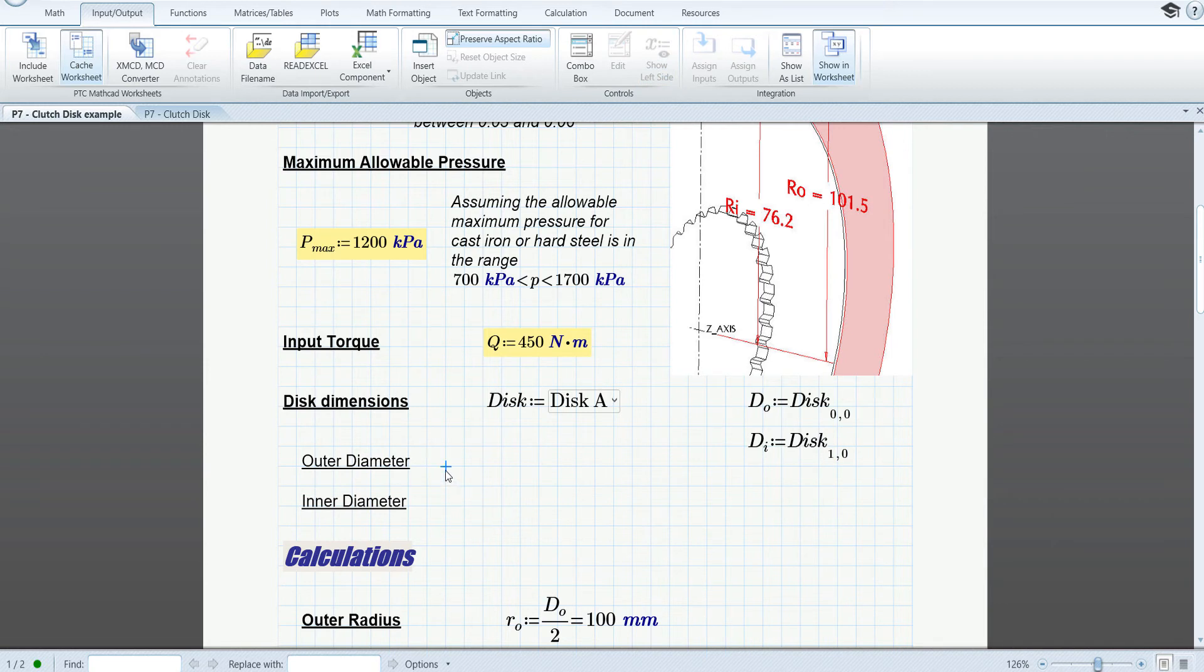Now we can evaluate the outer diameter and the inner diameter so we can see what our selections are. In this particular case, disk A is selected, which is an outer diameter of 200 millimeters and an inner diameter of 152 millimeters.